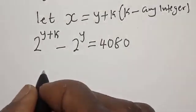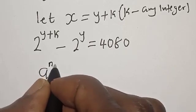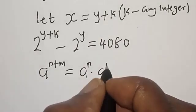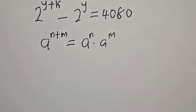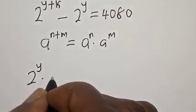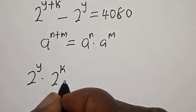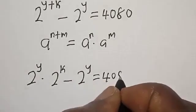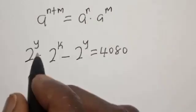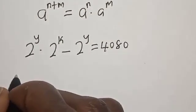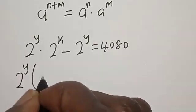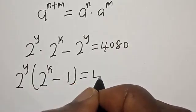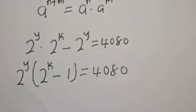Now note that a raised to power n plus m is equal to a raised to power n multiplied by a raised to power m. So 2 raised to power y multiplied by 2 raised to power k minus 2 raised to power y is equal to 4080. In this case, 2 raised to power y times (2 raised to power k minus 1) is equal to 4080.